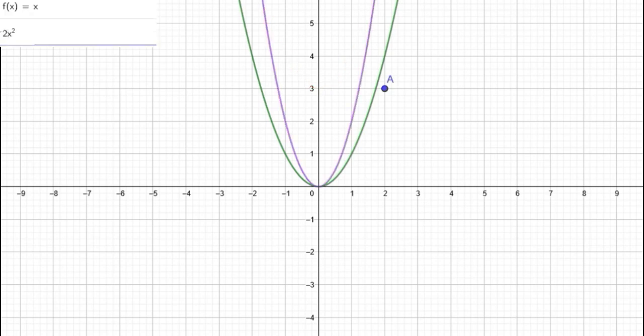Now what happens if we multiply a constant to x²? You see that cup contracts the curve. If we multiply 4, it contracts more. So the bigger the constant, it will contract more and more.